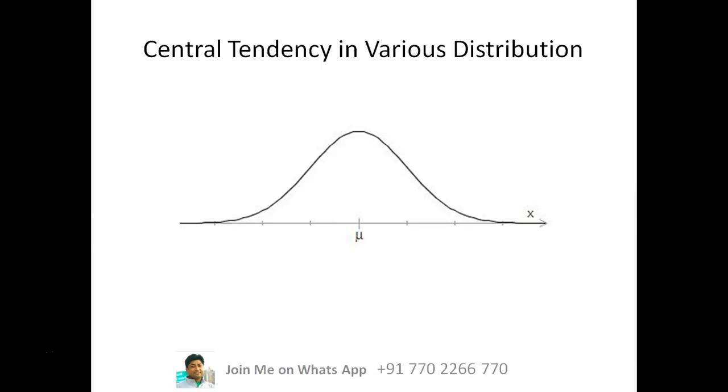So let's take the first case, a normal distribution curve, the ideal or the normal Gaussian distribution curve. In this case, all mean, median, mode is equal. So mean is equal to mode is equal to median.